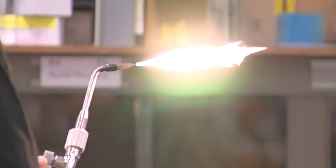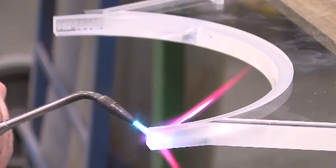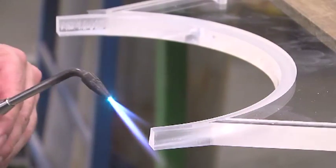The most commonly used method is flame polishing, using a blowtorch to carefully heat up the cut edges to the point where they start to melt.